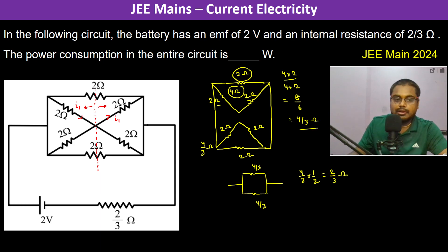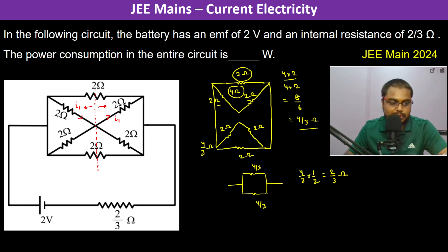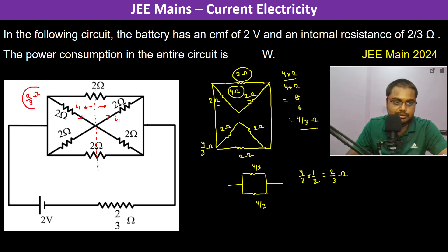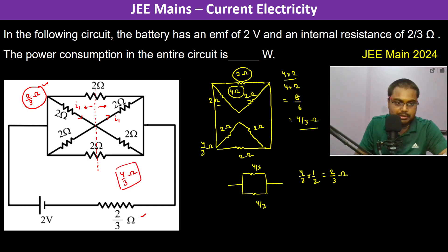The equivalent external resistance is 2/3 ohm. Adding the internal resistance in series, total resistance becomes 4/3 ohm. Therefore the current I = 2 ÷ (4/3) = 1.5 ampere.